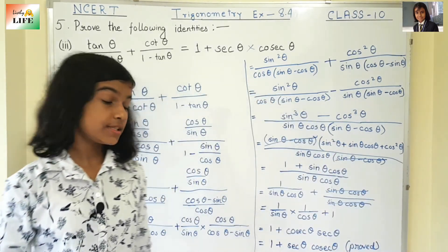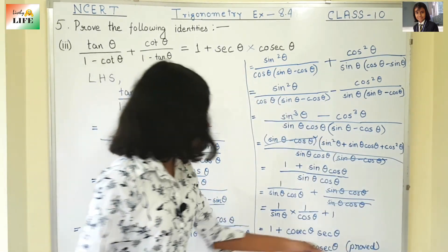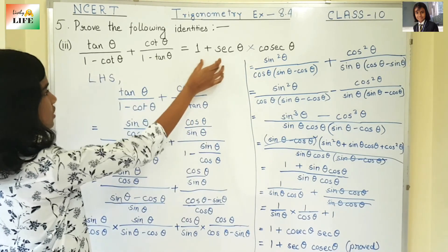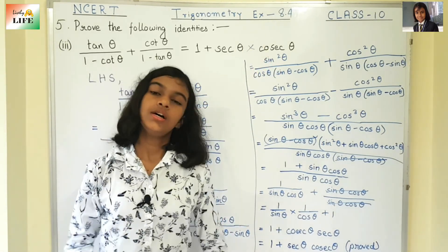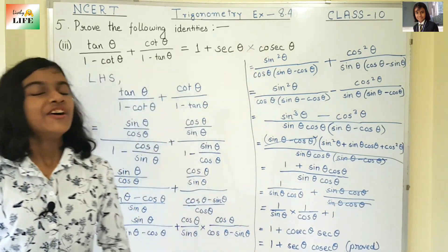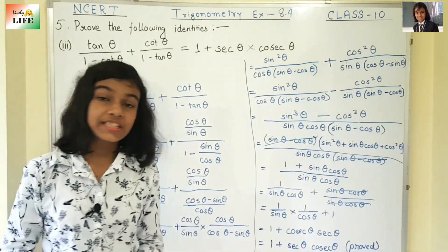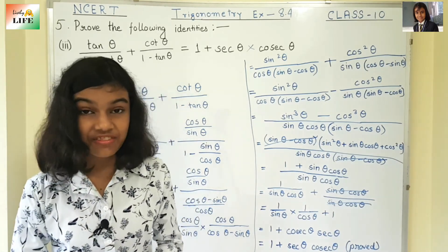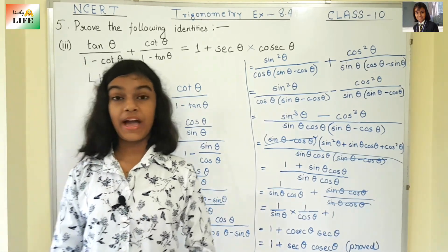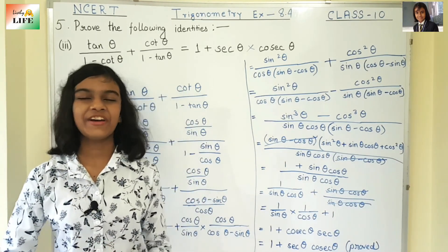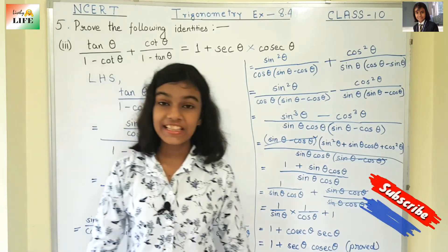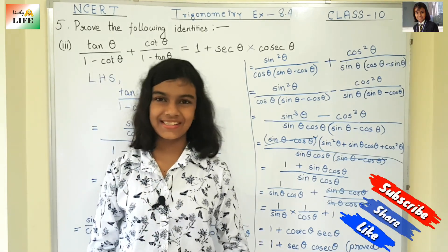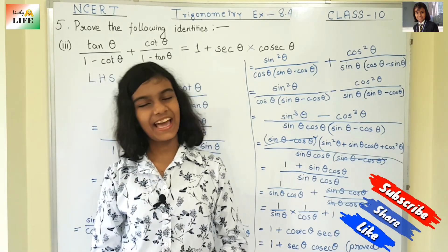So with this, we have already completed this one. The result is 1 plus sec theta into cosec theta, which matches the right hand side. With this, we have completed number 3 of question number 5. In the next video, I am going to be back with number 4 of question number 5. If you like this video, click on the like button and stay with me — please click on the subscribe button. Thank you.